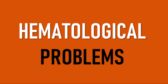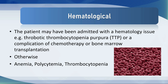Hematological problems. The patient may have been admitted with a hematology issue like thrombotic thrombocytopenic purpura, or may have a complication of chemotherapy or bone marrow transplantation. Otherwise, there will be anomalies on the patient's blood film. They may be anemic — commonly seen in ICU, often iatrogenic from blood draws. There may be polycythemia. Commonly, particularly in sepsis, we see thrombocytopenia, and this needs to be identified if the platelets are falling, as it's part of the SOFA score indicating progression of critical illness.